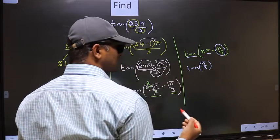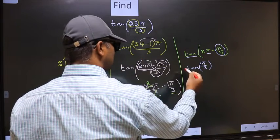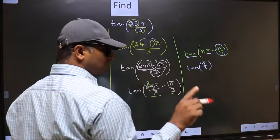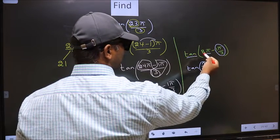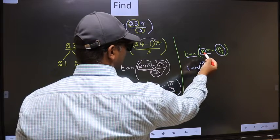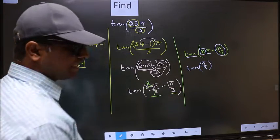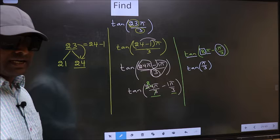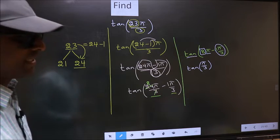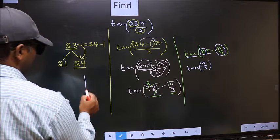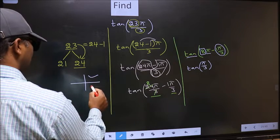Now the question is, will we get plus or minus? To answer that, we should look at the number before π, which is 8. 8 is even, and all even multiples of π lie in either the first or the fourth quadrant.